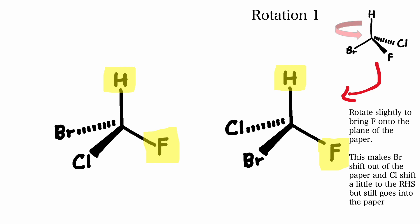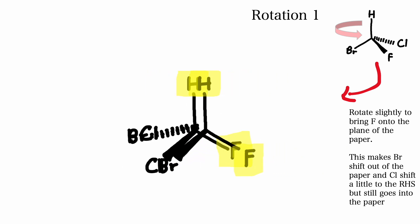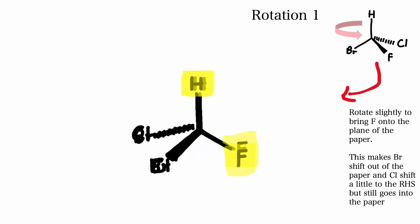What we want to do is to get fluorine onto the plane of the page because that will help us see if the two molecules can be superimposed onto each other. And here we can see that it cannot be because hydrogen and fluorine are both on the plane of the page and can be superimposed onto each other. However, bromine and chlorine cannot be superimposed onto each other.